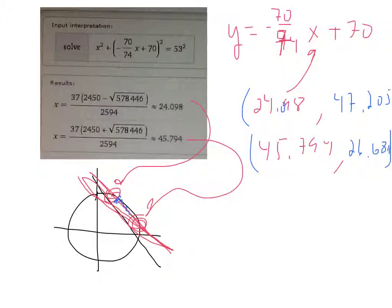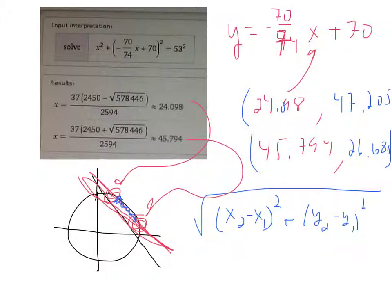Remember the distance formula is just you subtract the x's and square them, subtract the y's and square them, and take the square root. It's just the Pythagorean theorem. That should get you the answer in the back of the book. Hope that helps.